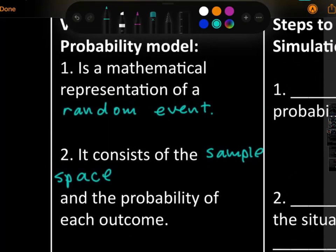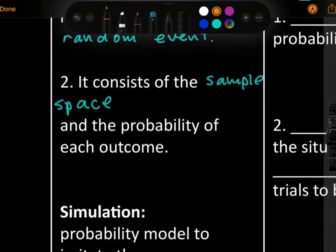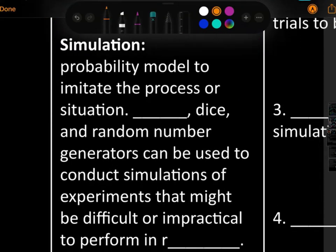So what's the probability model that you get into a really good university, like say UCI. Okay, what's a simulation?